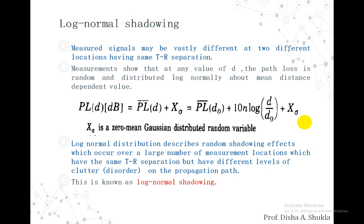This is called log normal shadowing. Here we are talking mostly about the shadowing effect or the random shadowing effect that occurs due to the obstruction between the transmitter and the receiver. This is the log distance model or the log normal shadowing model.